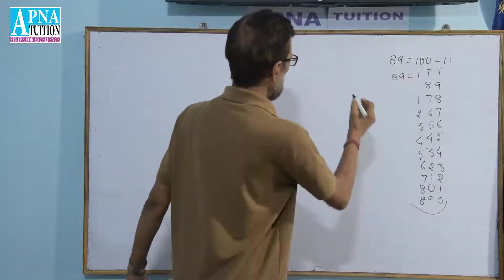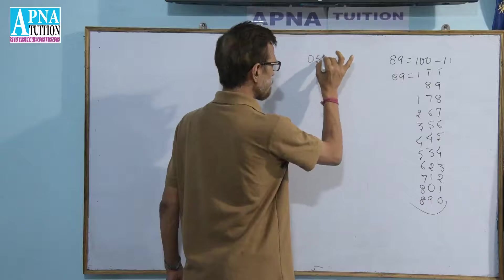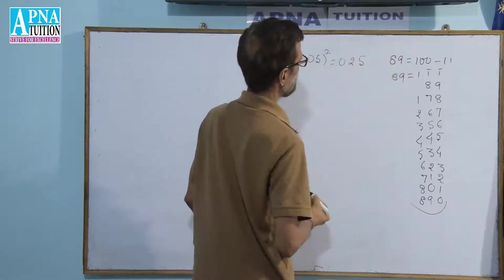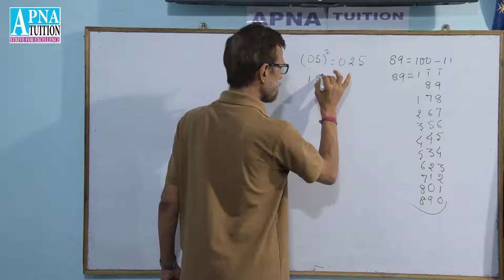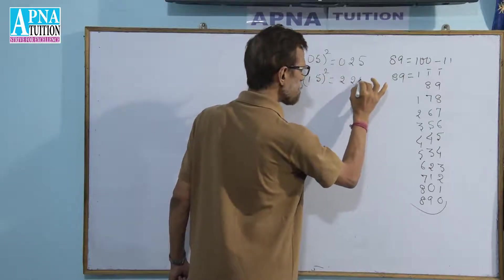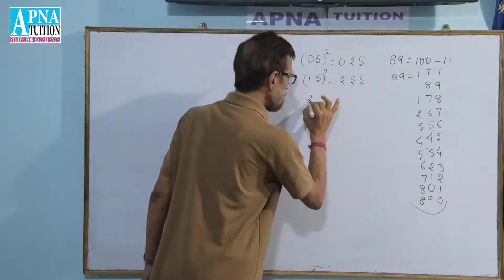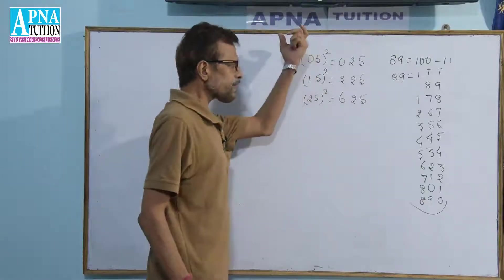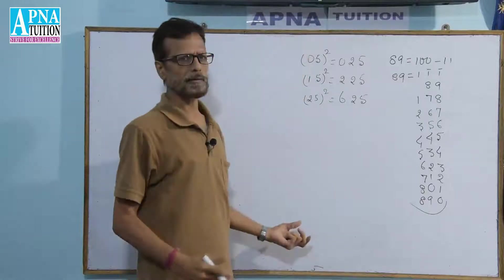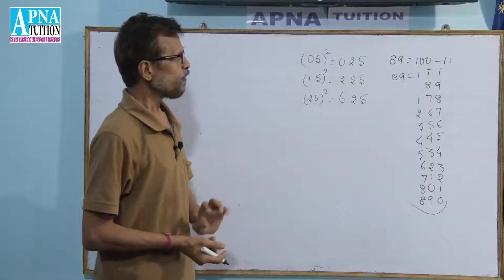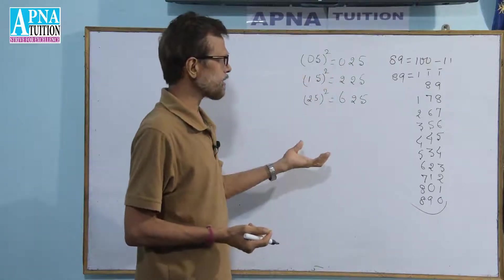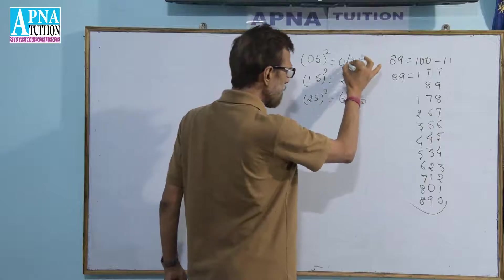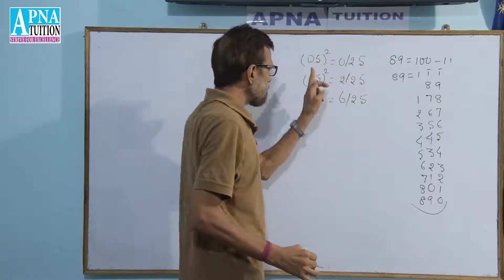Now, we all know that 5² equals 25, 15² equals 225, and 25² equals 625. But when we continue this pattern further, we have a problem — how can we solve it? When we compare, we find that the last 2 digits are always 25 when the unit place digit is 5.